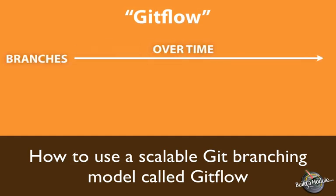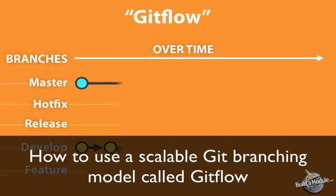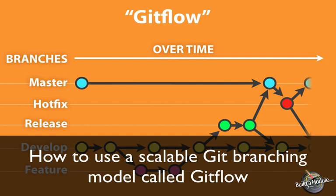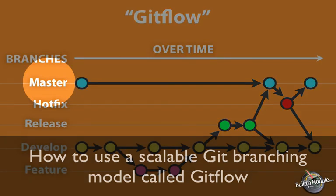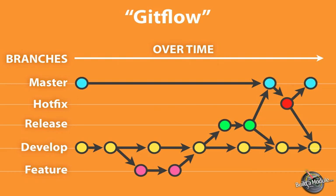Throughout this series, you've seen the number of branches that we use in order to manage our workflow growing. To begin with, we started with a single branch called master, and this is the branch that gets created when our repository is originally initialized. We did all of our development on that branch, even created a remote repository and cloned that repository in a production environment using just that branch, and we were able to sync up code from our development site up to our production site and back again.